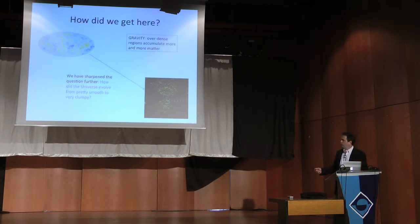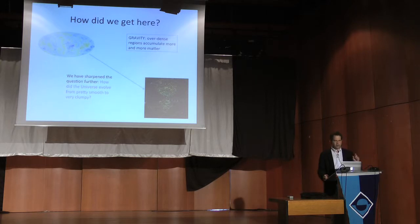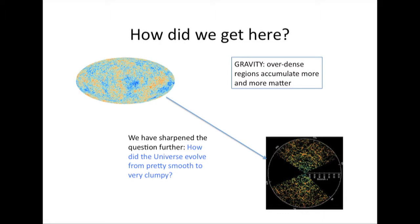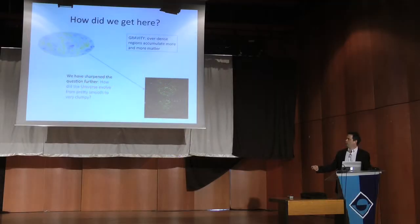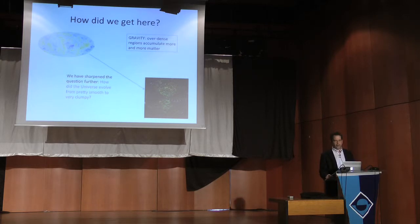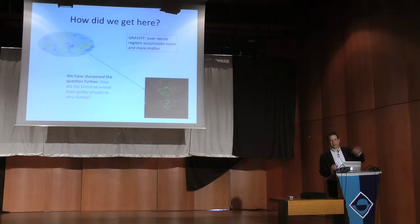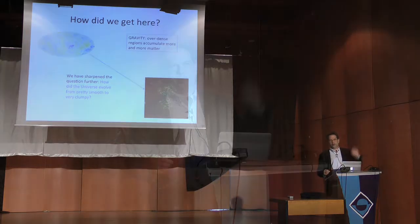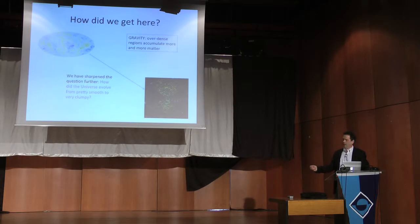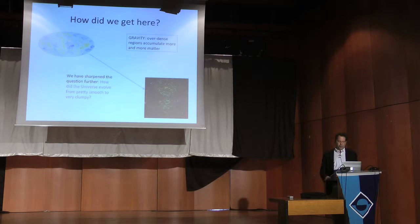Last time we reduced the age-old question — how did we get here — to two questions. The first is: how did the universe evolve from being pretty smooth? This map indicates that very early on, when the universe was only 380,000 years old, there were as many protons and electrons here as there were over there, to about one part in 100,000. So if there were 10,000 protons here, there might have been 10,001 here. It was much smoother than it is today. So our first question was: how did the universe evolve from being pretty smooth to being very clumpy?